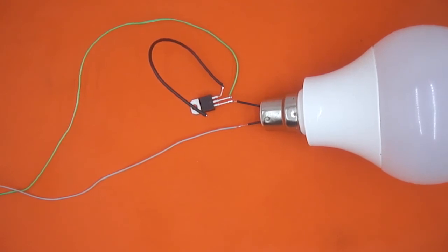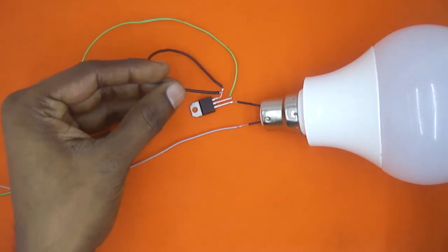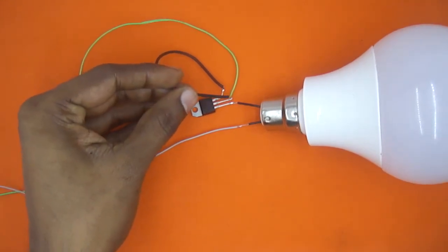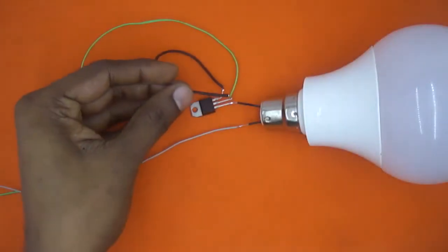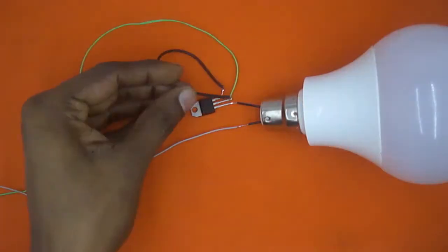So now power supply is connected. Now whenever I will connect this wire to T2, the bulb should glow. So here you can see whenever I am touching the power supply to T2, the bulb is glowing.